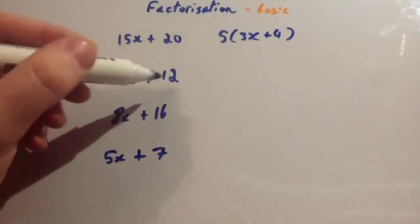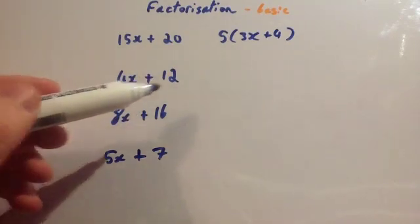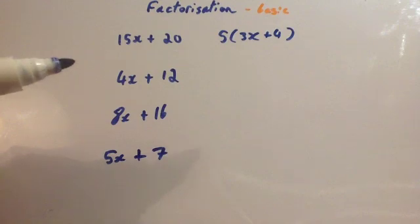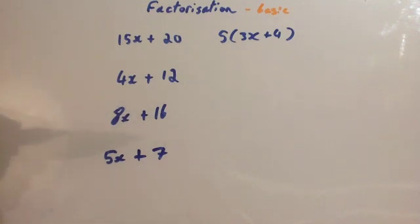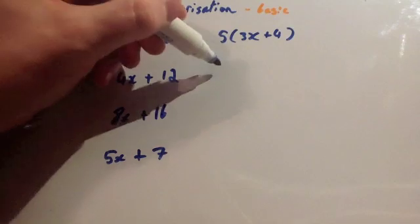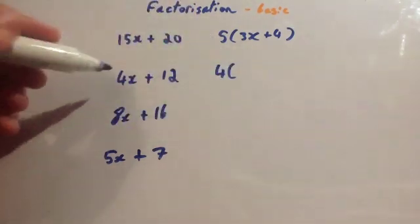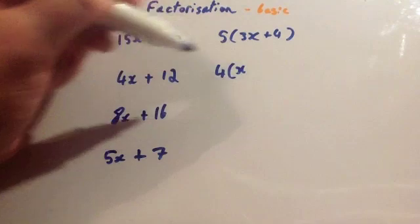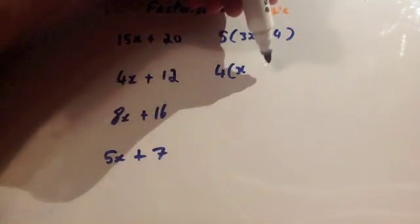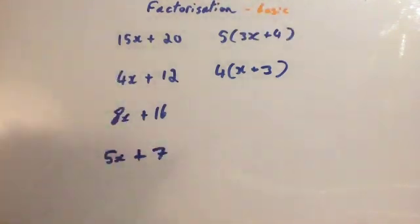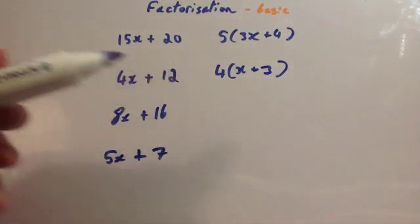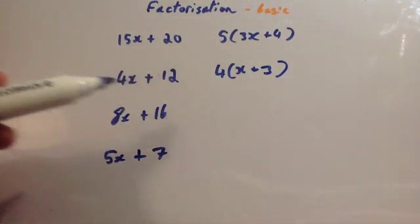Next: 4x + 12. These are both divisible by 2, but the largest common factor is 4. Always try to divide by the largest number, so go for the largest possible factor. So 4(4x ÷ 4 + 12 ÷ 4) = 4(x + 3). You just go for the largest factor for both terms.